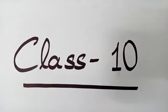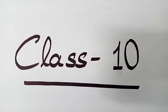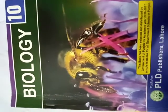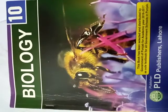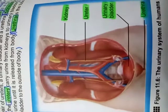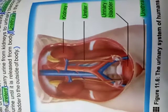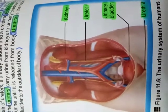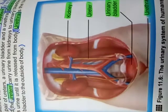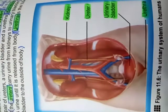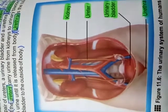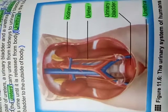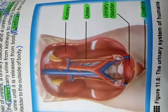Bismillahirrahmanirrahim, Assalamualaikum class 10. Today we are going to study about the urinary system in humans. This is your book page number 22, and this is the urinary system of humans. The structures are shown in the diagram before you. First I will explain through theory, and after that we will come to the diagram.